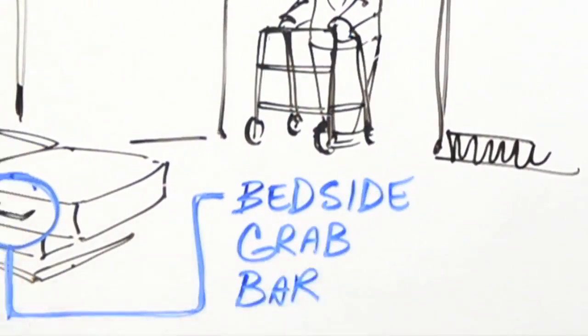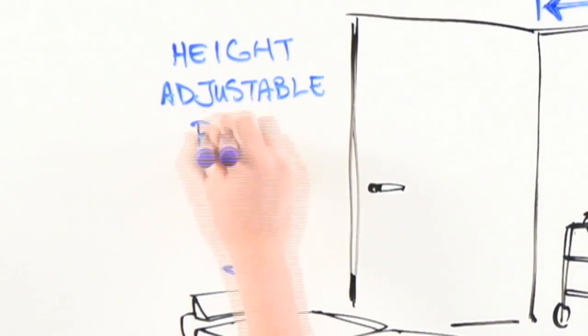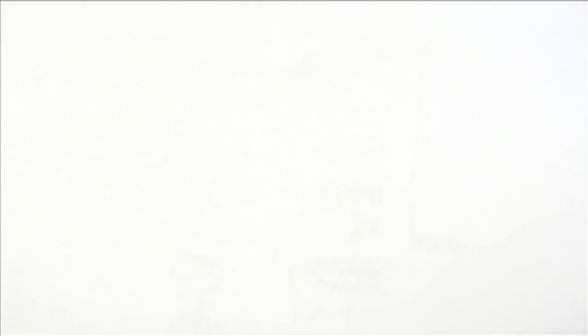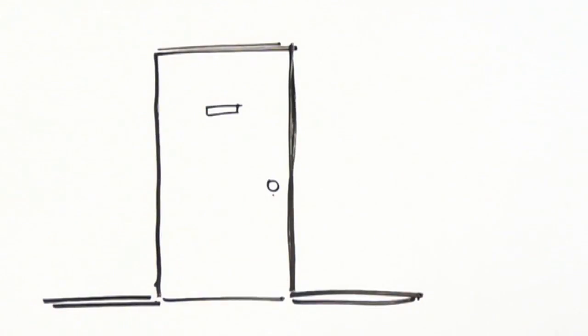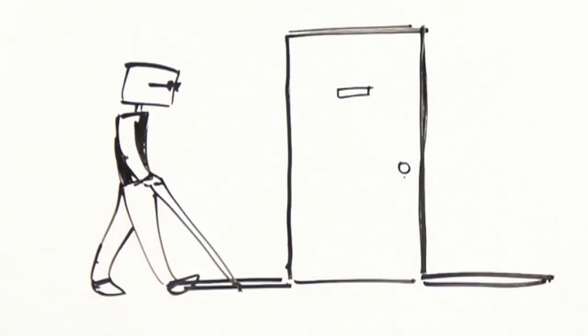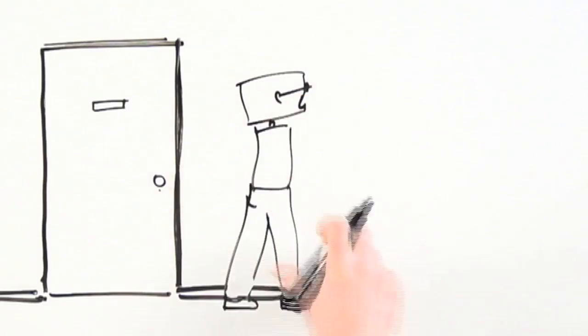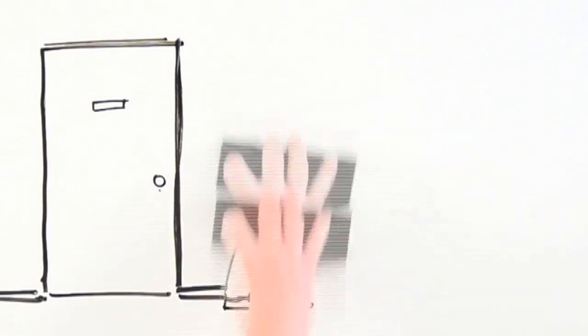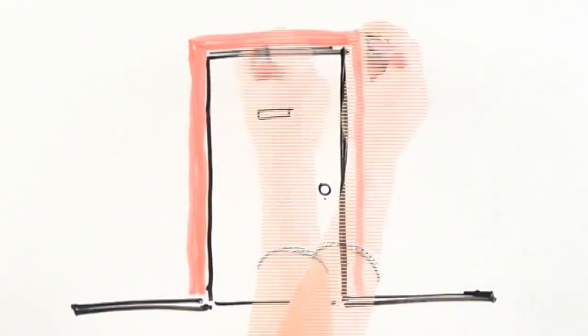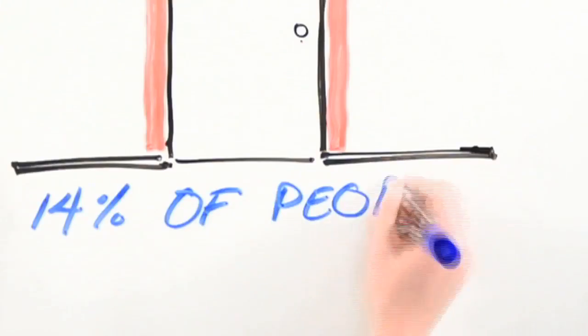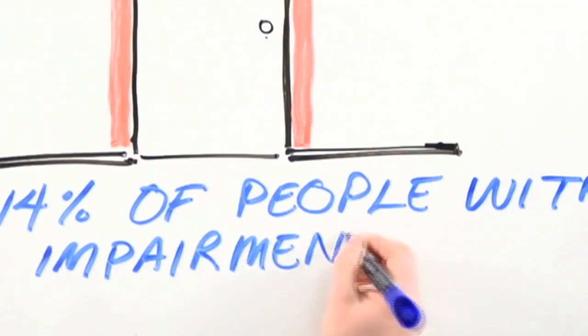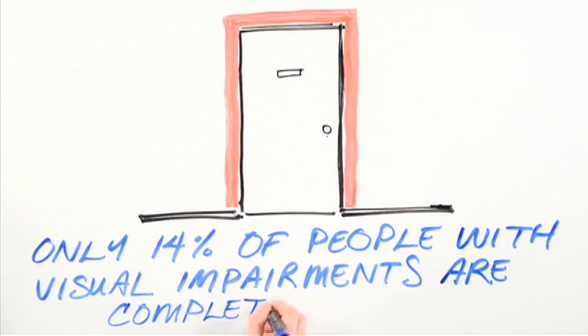And not all disabilities are physical disabilities. People with visual and hearing impairments can also encounter problems. If you can't see well and you're called in to meet with your doctor, you may have difficulty making your way safely into the examination room. Something as simple as painting a doorframe with a contrasting colour can make it much easier for people with visual impairments to enter a room safely.